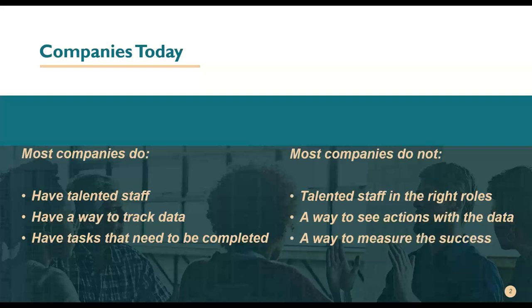The next thing is a way to measure success. People look at success in different ways — one person getting overtime might think they're successful because they're earning more money, while a lean or quality department would say they're not successful because man-hours are over. Today's webinar is really about how to be successful using different tools. We have folks from different industries and backgrounds, so how do you apply this to your specific situation?